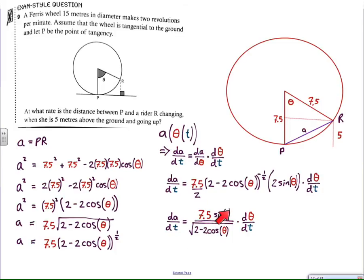Now I have a direct relationship between dA/dt and dθ/dt. I can find the rate of change of the distance using this formula. The formula has a couple of pitfalls. We need to know what dθ/dt is, and we also need to know what theta is, connected to the fact that the rider is 5 meters above the ground and going up.